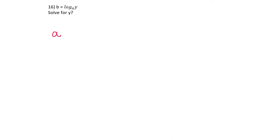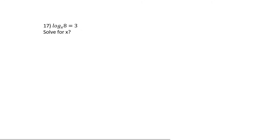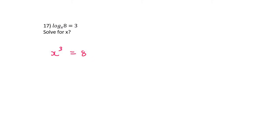In question 16, we need to reverse a log. To reverse log: take the base (a) to the power of whatever's on the other side (b), and make that equal to the remaining side. So y = a^b. For question 17, to get x alone reverse the log: x to the power of (other side) equals 8. Then take the cube root on both sides, giving x = 2.